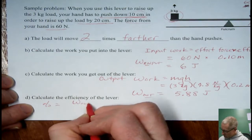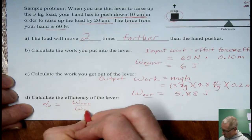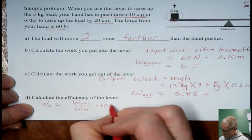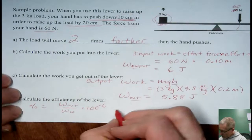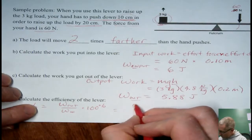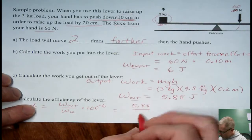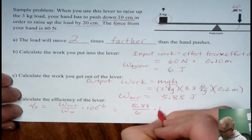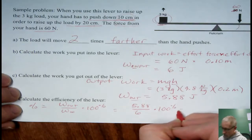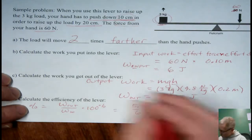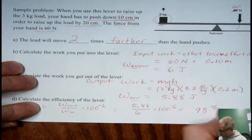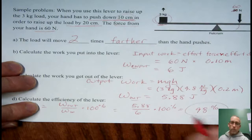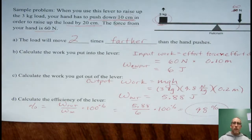So the efficiency. This is the work out divided by the work in and then times a hundred percent. You see I'm using abbreviations here that just make it a little bit more compact. So that's 5.88 divided by 6 and then times 100. Again I did that earlier. That ends up ninety eight percent. That's actually very efficient. Most machines are less than that.